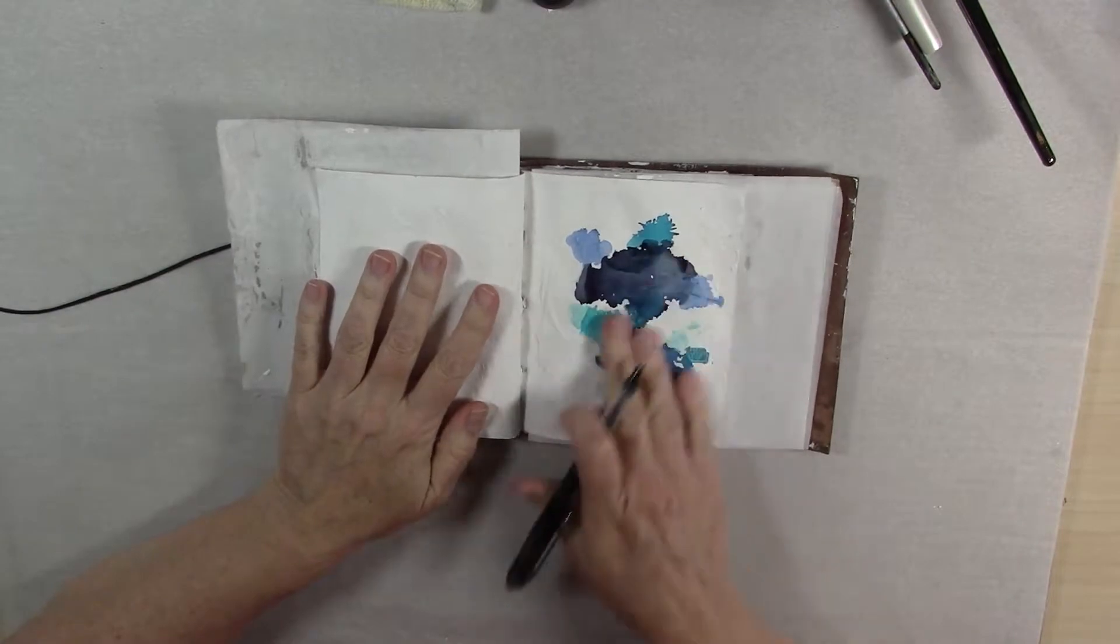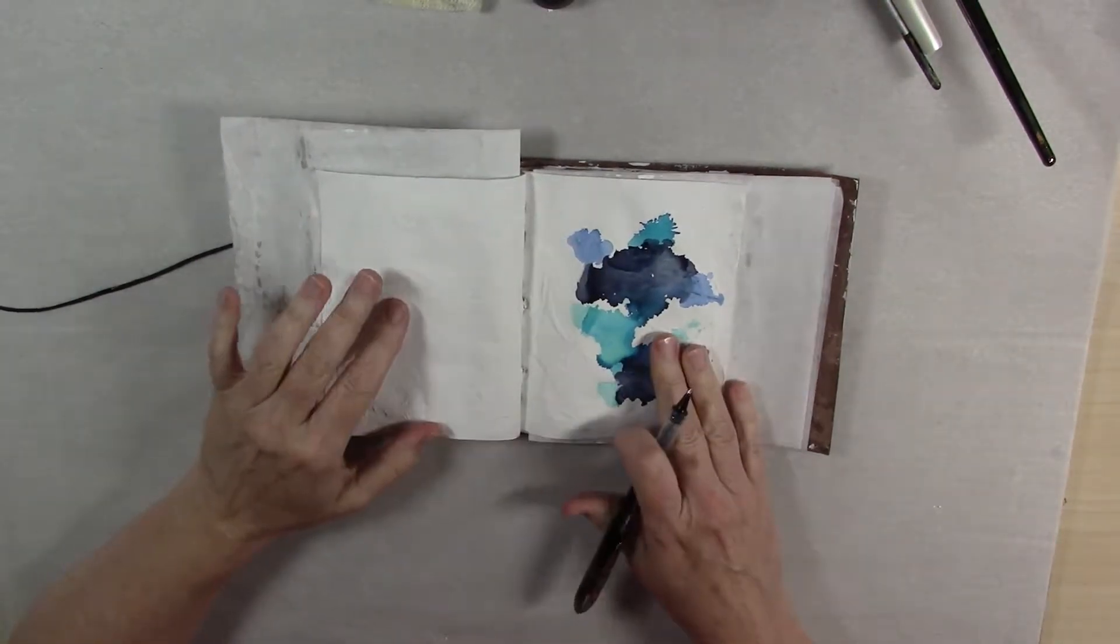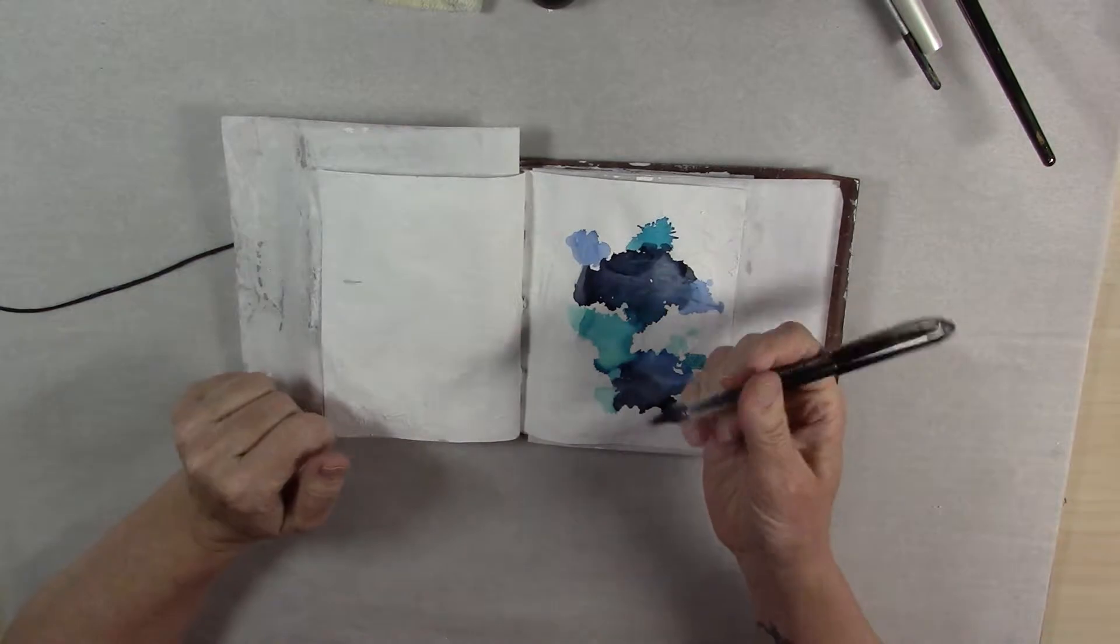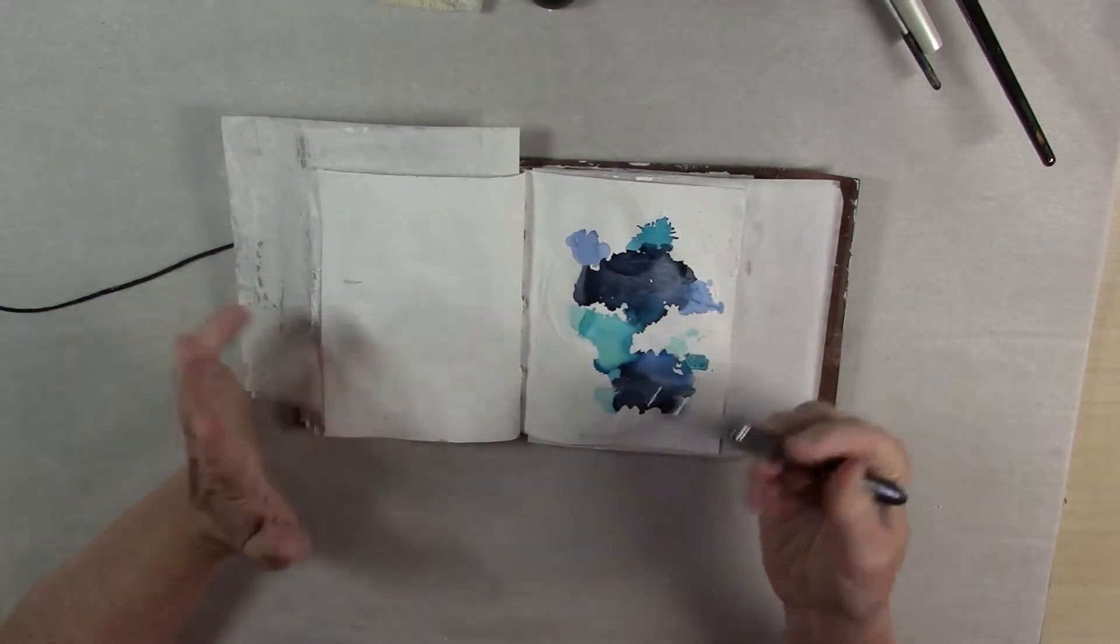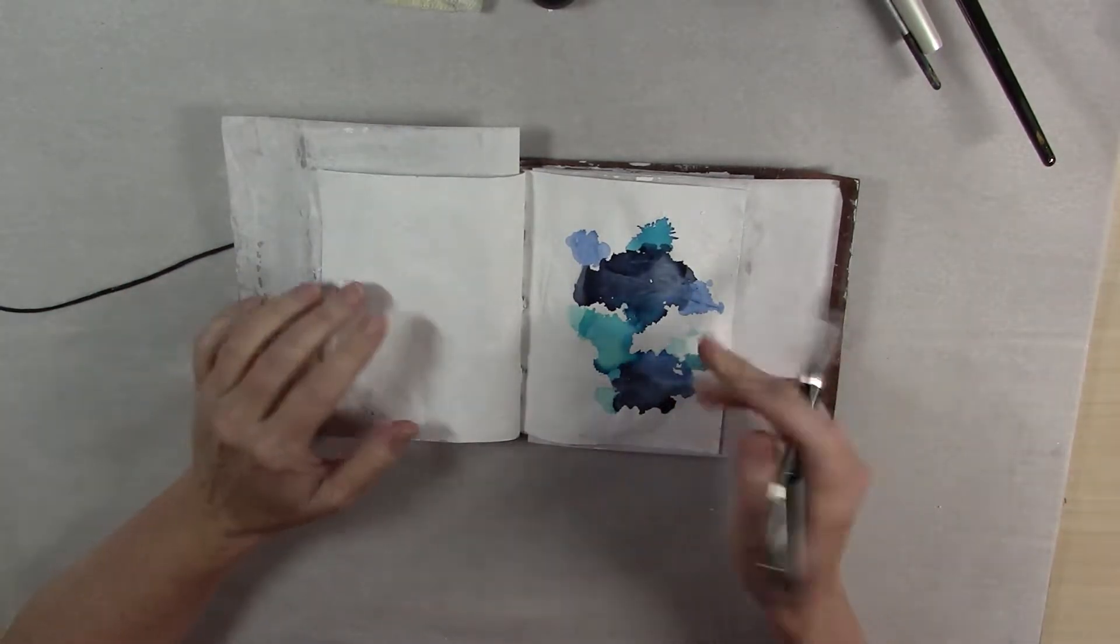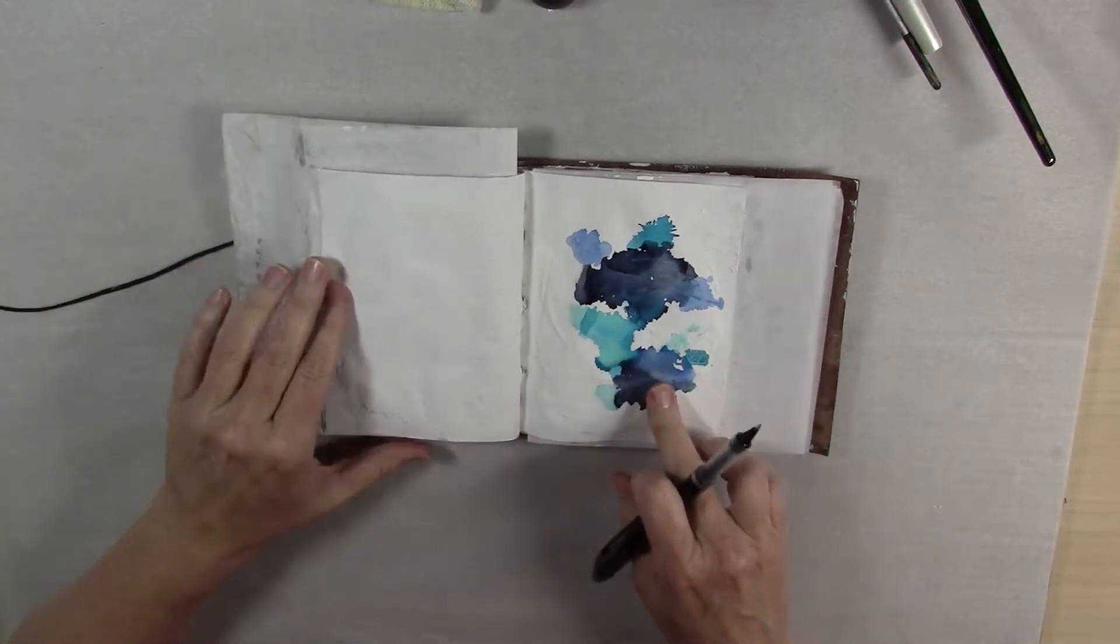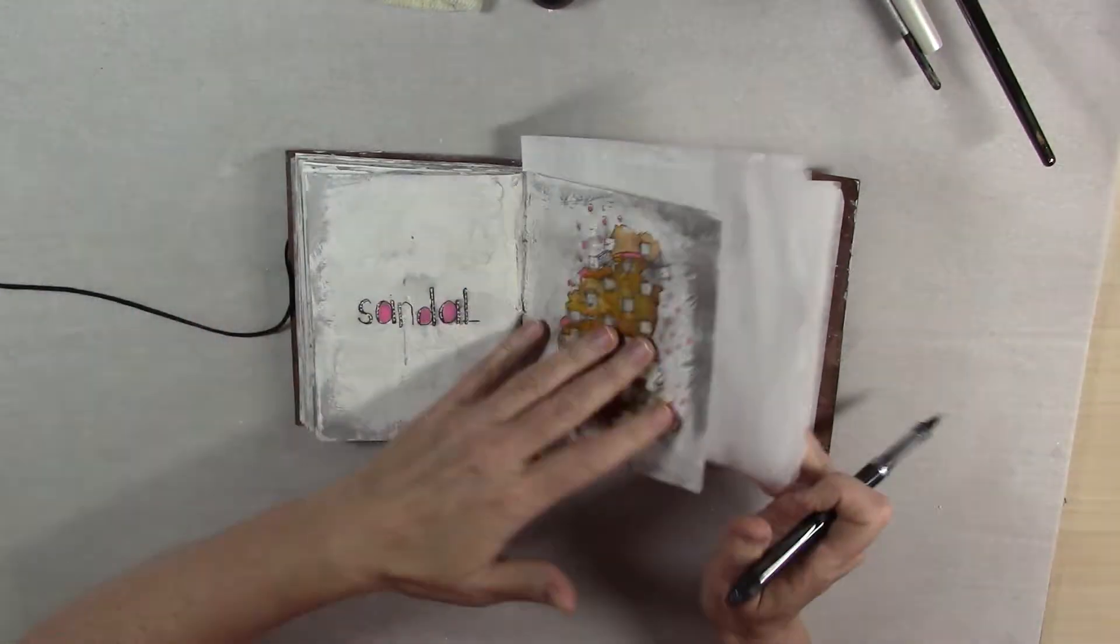Okay, so this is dry. Alcohol ink dries very quickly, so I'm ready for the next step. All I'm doing is taking your favorite black doodle pen and I'm going to use the shape of this and outline it. So I'll show you what I mean.